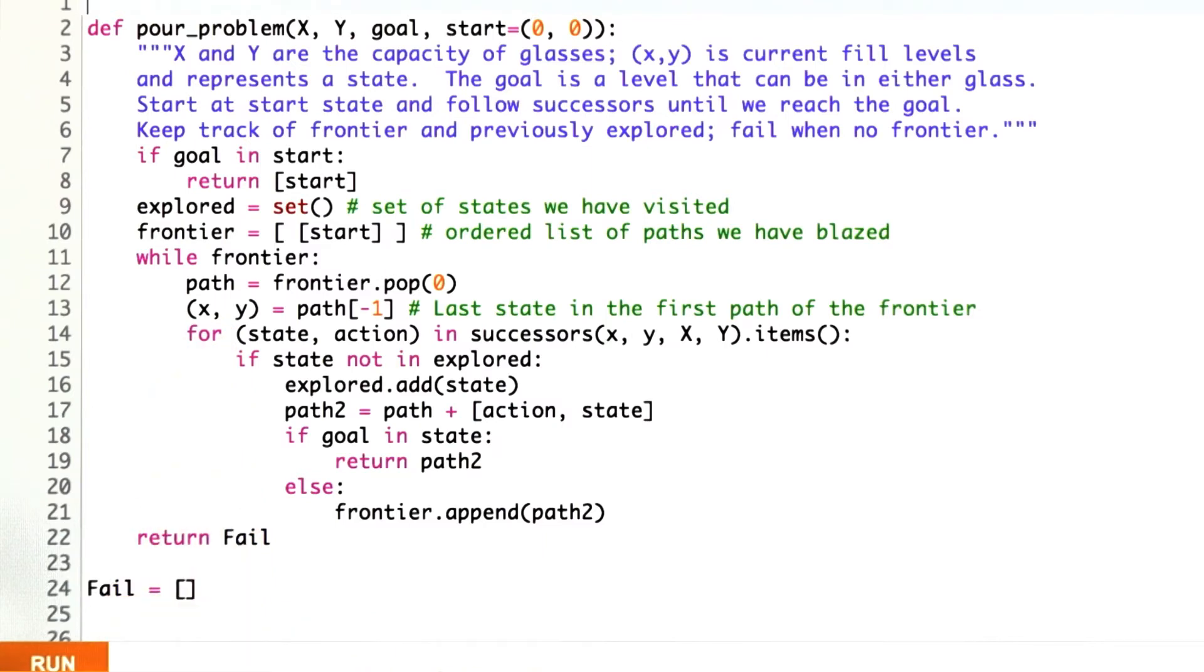Then I've defined a successor function that gives me all the successor states and the actions we used to get from there. There should be six of those.